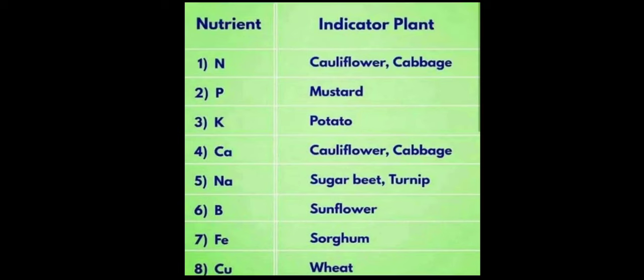Some nutrients play an important role as indicators of plants. For example: one, nitrogen — indicator plants are cauliflower and cabbage; two, phosphorus (P) — mustard; three, potassium (K) — potato; four, calcium — cauliflower and cabbage; five, sodium — sugar beet and turnip.